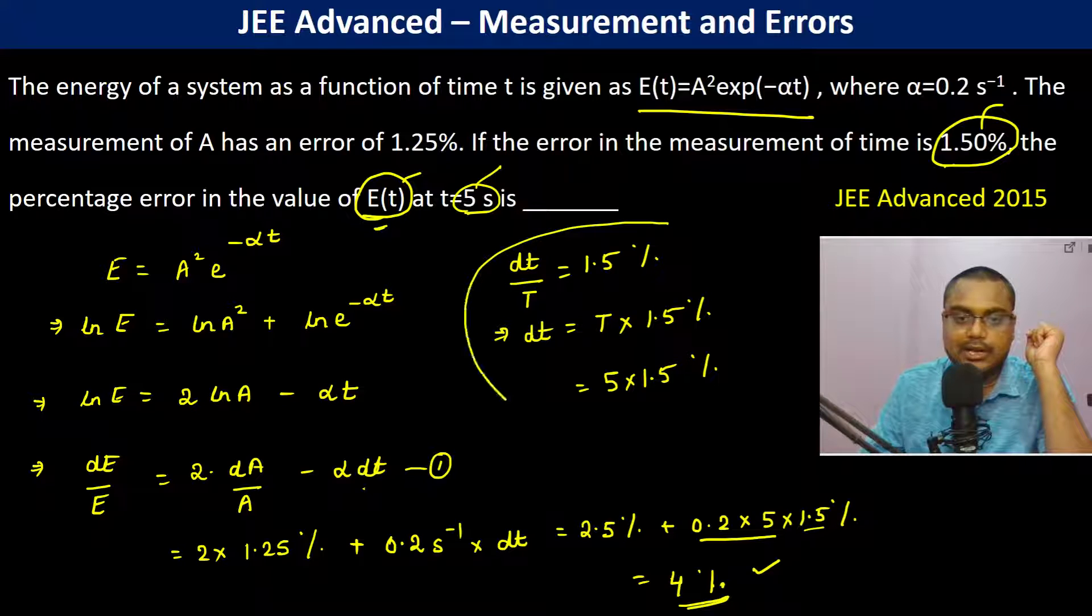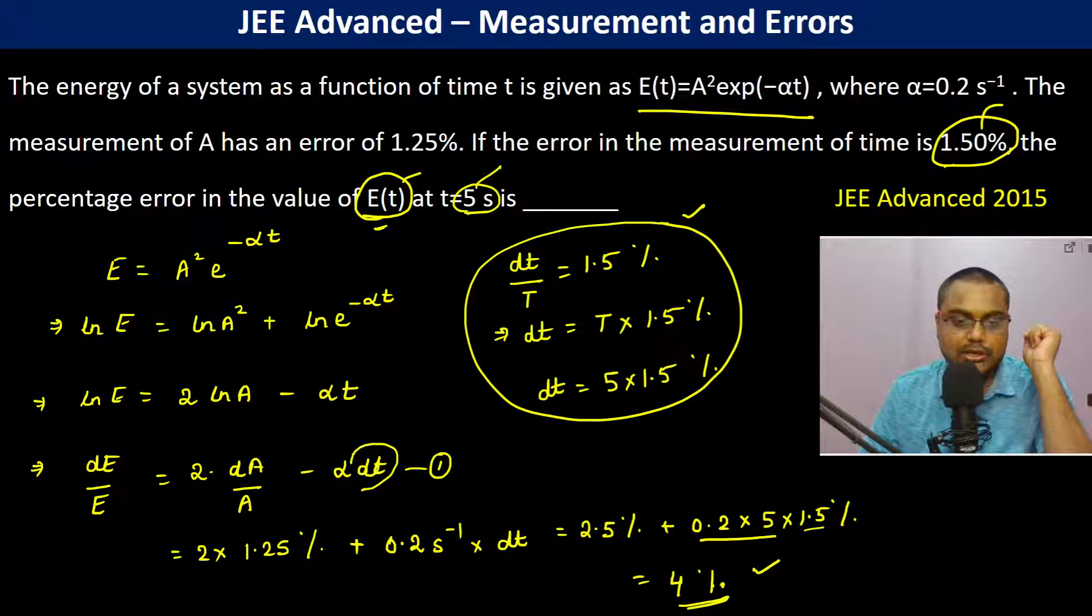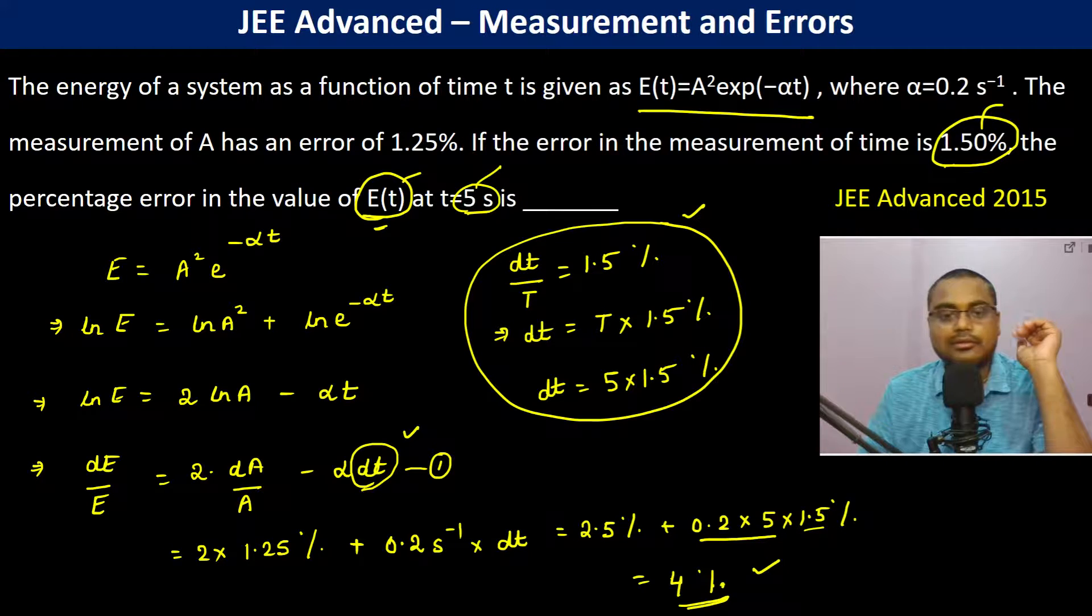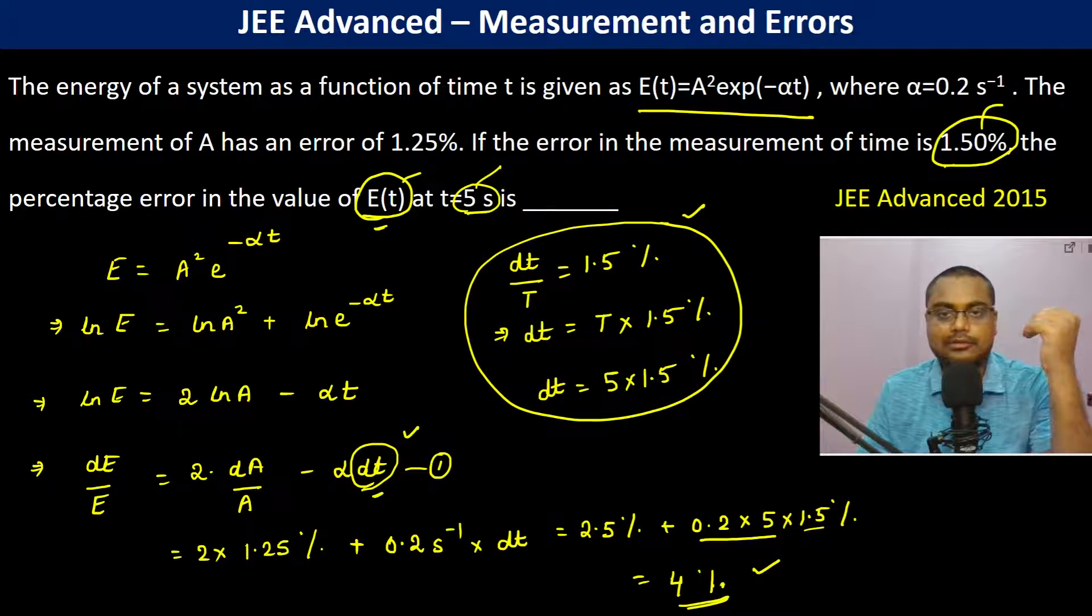So we have to take care that here we have to calculate dt because in the equation dt is mentioned, dt comes, it is not dt by t. So it is dt is mentioned. So therefore dt we have to calculate.